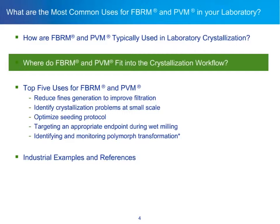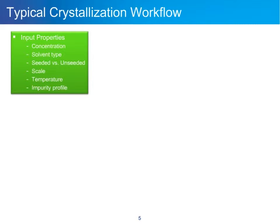Moving on, where do FBRM and PVM fit into the crystallization workflow? In a typical crystallization workflow, you have input properties such as concentration, solvent type, whether the process is seeded or unseeded, the scale of the process, temperature, and impurity profile. A lot of the time, these are set by the chemistry.